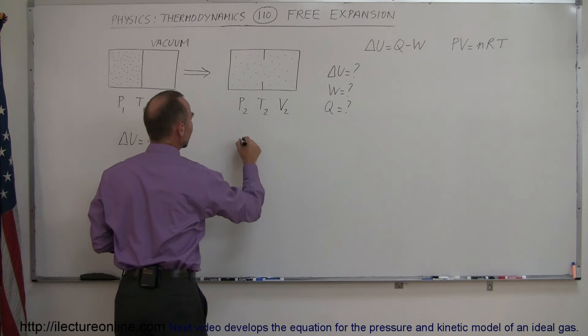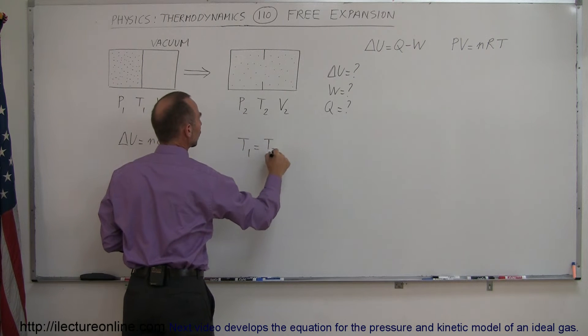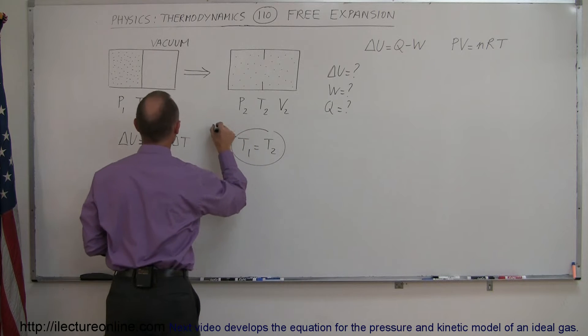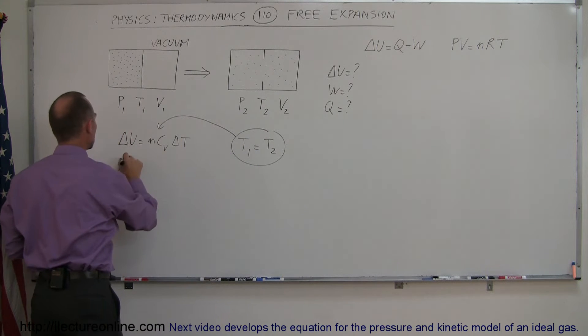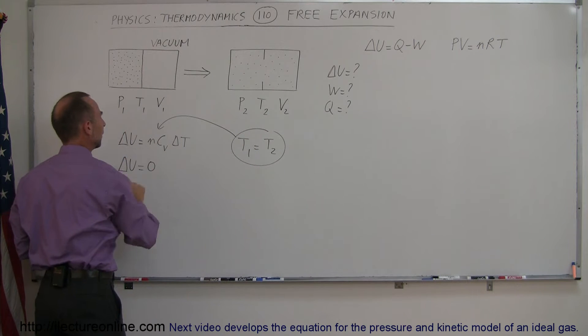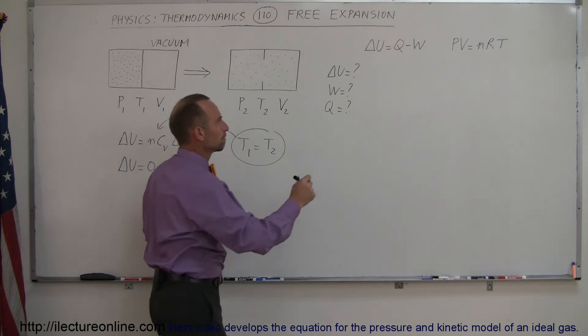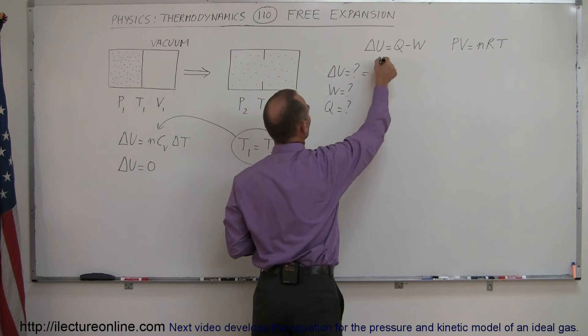So therefore, we can say that T1 is equal to T2. And if that is the case, then we can go back over here and say that delta U is equal to 0. So that takes care of this part right here.